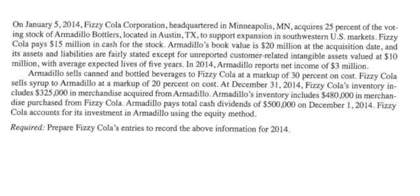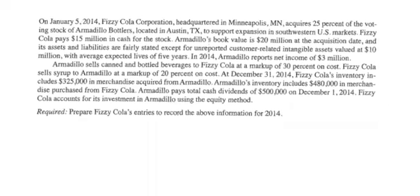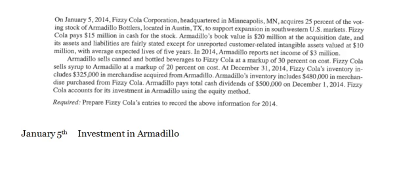So we need to do a journal entry for January 5th to make the investment in Armadillo. The debit will be to Investment in Armadillo, $15 million. And the problem says that we paid cash, so credit Cash, $15 million.